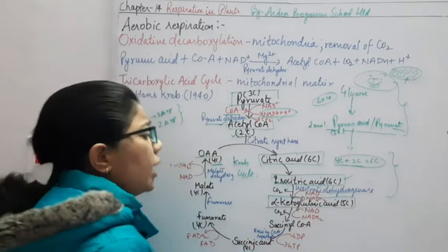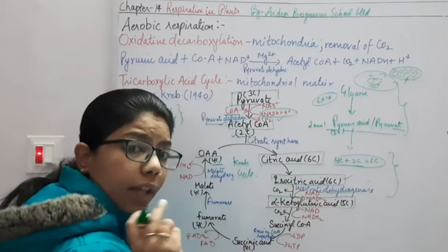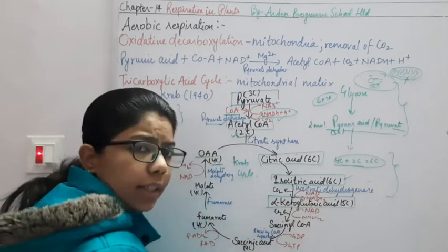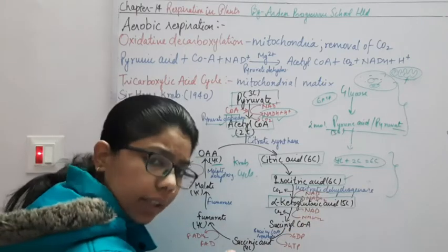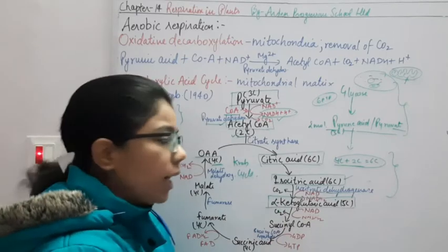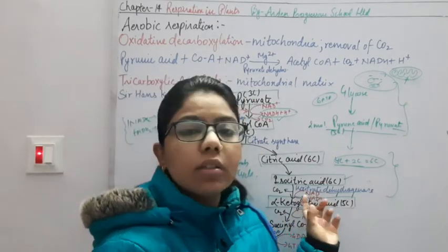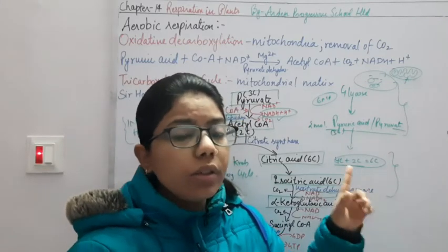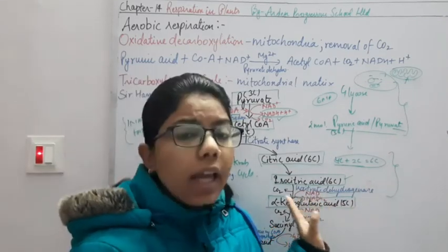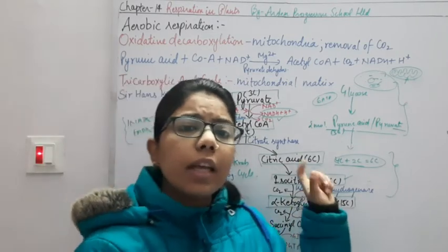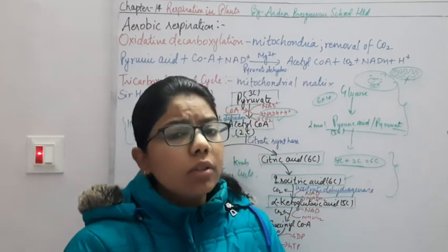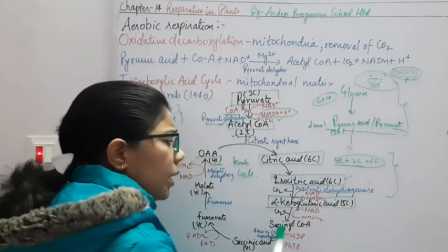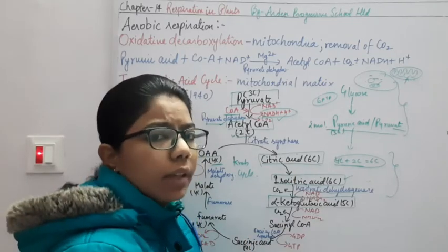Before and after alpha-ketoglutaric acid, dehydrogenation occurs — in both cases we are getting NADH₂. These NADH₂ are sources of ATP, but only when they go into the electron transport system. Right now they are not giving energy directly. Direct ATP production, like in glycolysis, is called substrate-level phosphorylation. In the Krebs cycle, NADH₂ must go into the electron transport system to yield ATP.